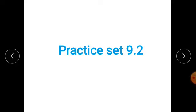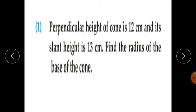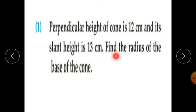Now we will solve questions from practice set 9.2. Question number 1: The perpendicular height of a cone is 12 cm and its slant height is 13 cm. Find the radius of the base of the cone.